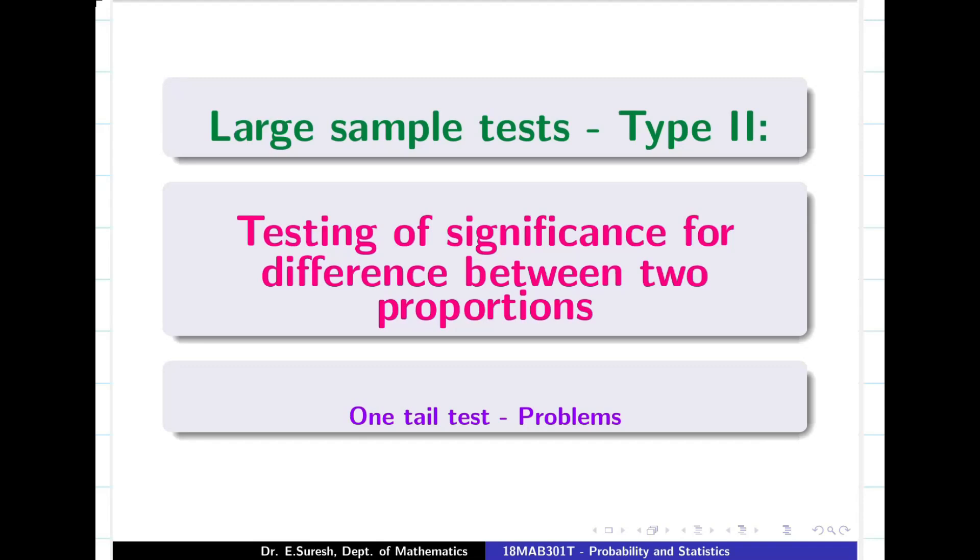Now we are going to see problems on large sample test, testing of hypothesis for difference between two proportions. We are going to deal with one-tail test. Previously we were seeing two-tail test problems. Let us see how to classify the problem as one-tail test or two-tail test.